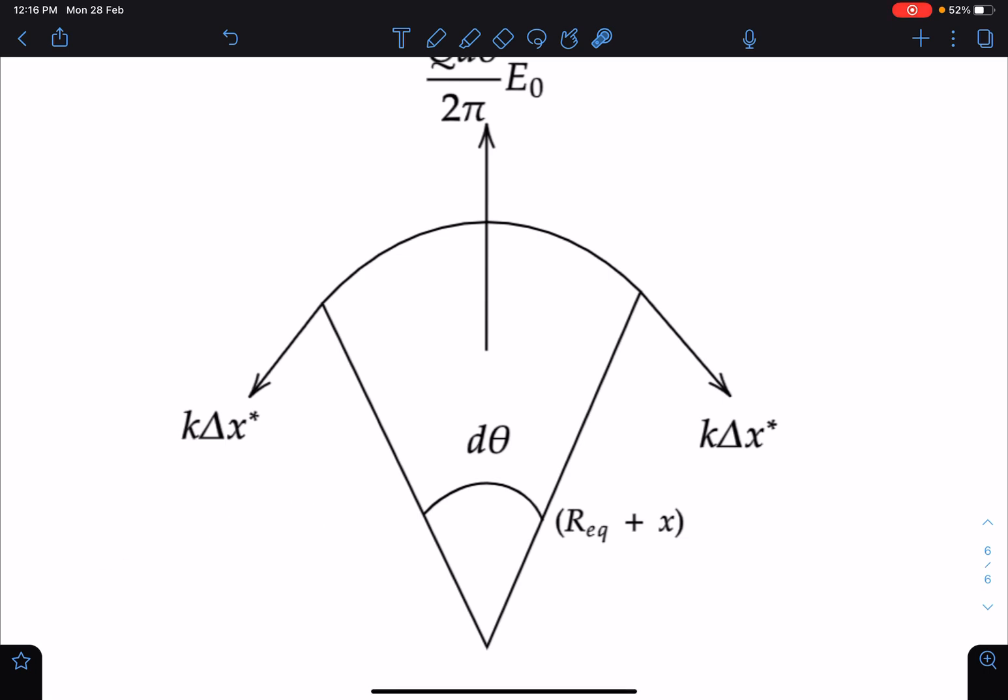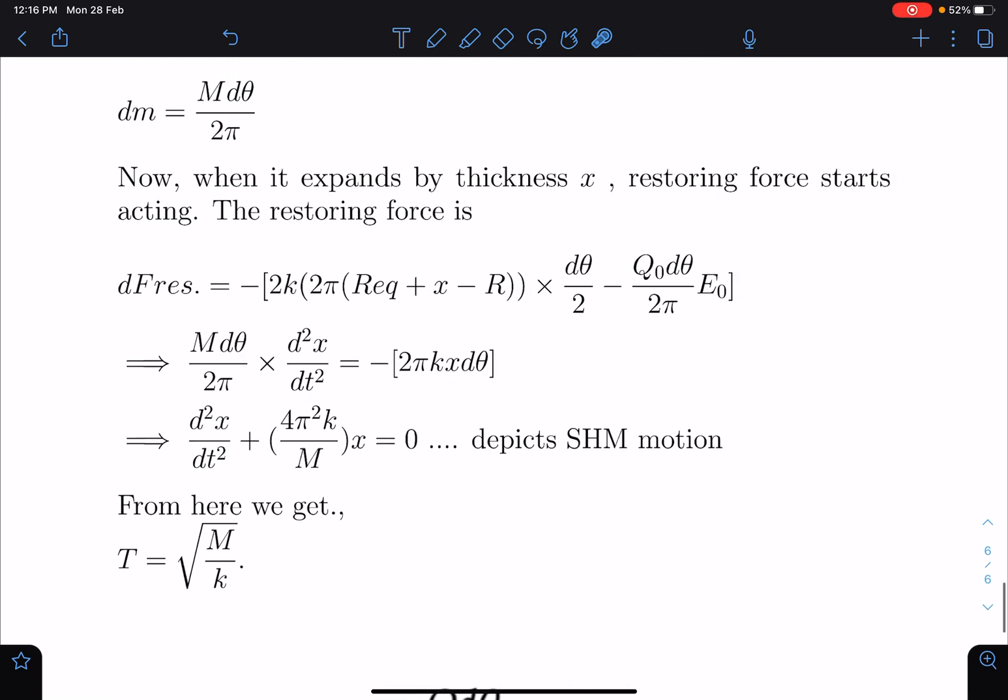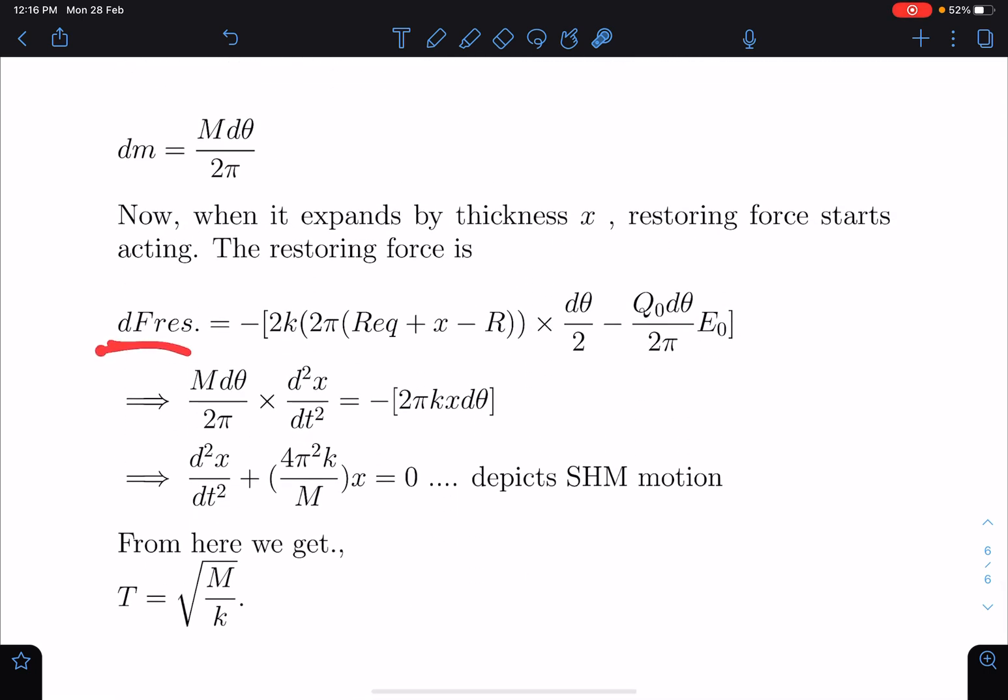So that is what I have written here: dF_restoring is 2k·Δx_new·sin(dθ/2) minus electric force. When I simplify this, this R_equilibrium and minus R condition is getting cancelled from the equilibrium condition itself.